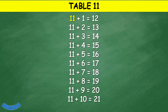Table 11: 11 plus 1 equals 12, 11 plus 2 equals 13, 11 plus 3 equals 14, 11 plus 4 equals 15, 11 plus 5 equals 16, 11 plus 6 equals 17, 11 plus 7 equals 18, 11 plus 8 equals 19, 11 plus 9 equals 20, 11 plus 10 equals 21.